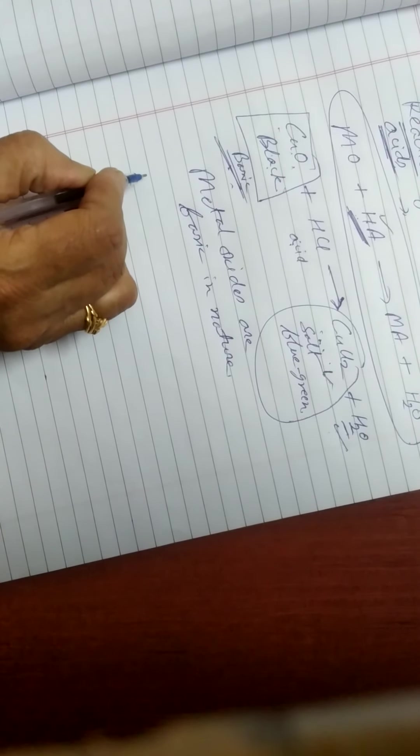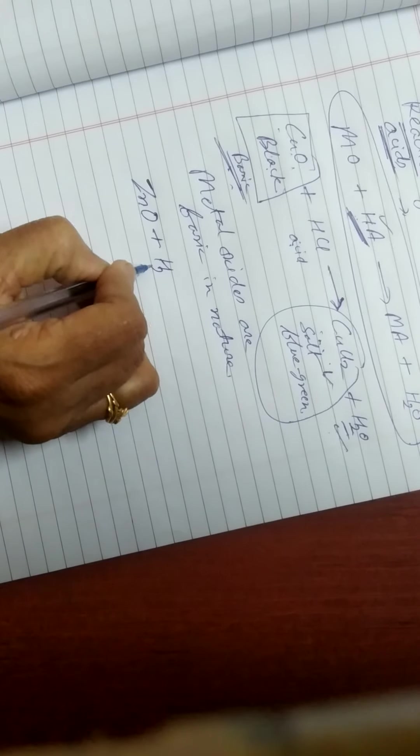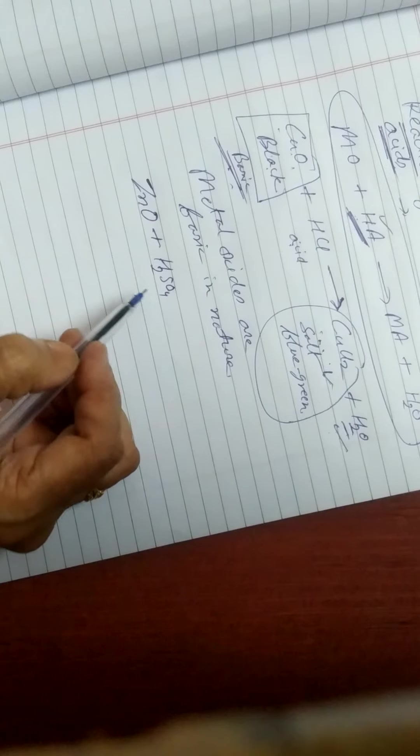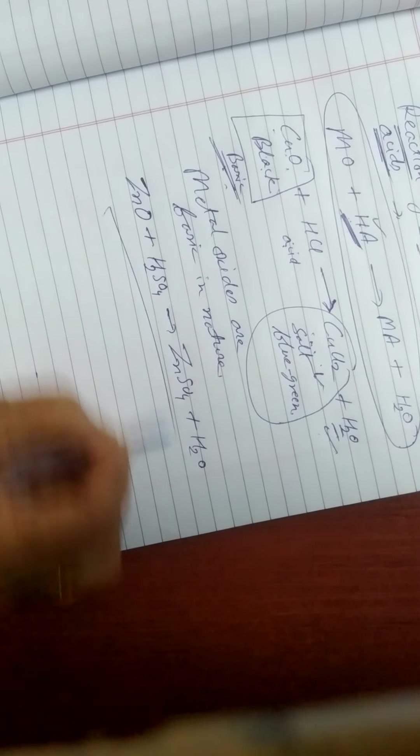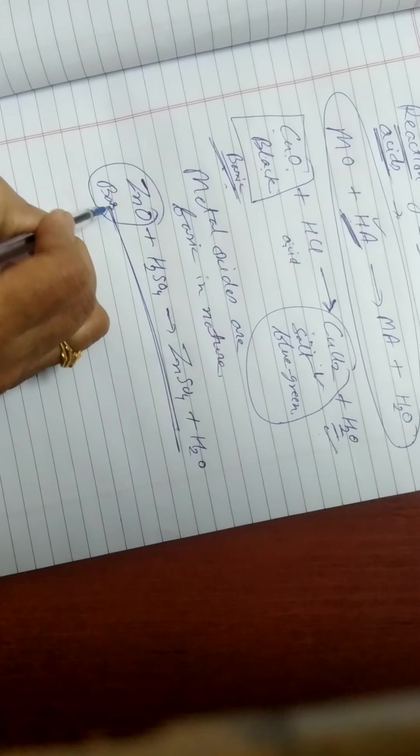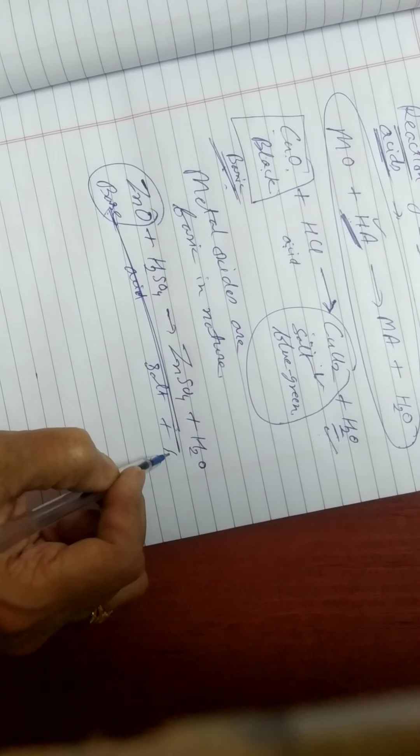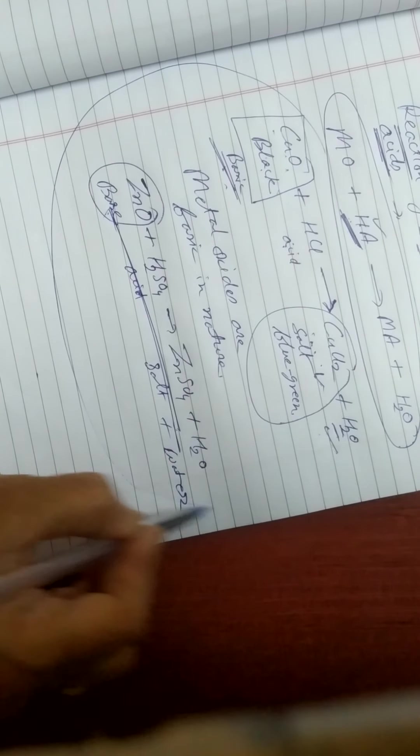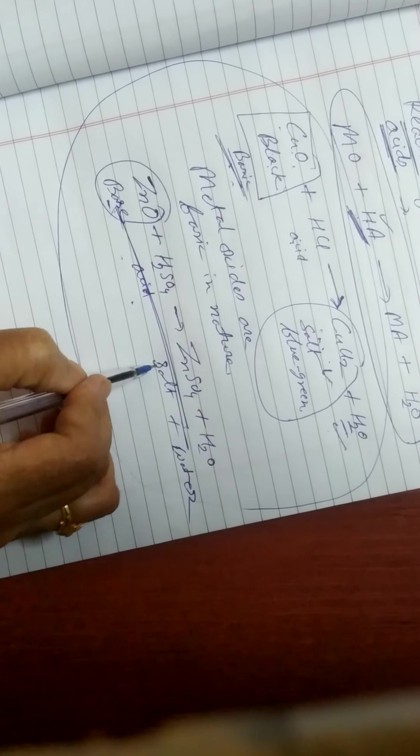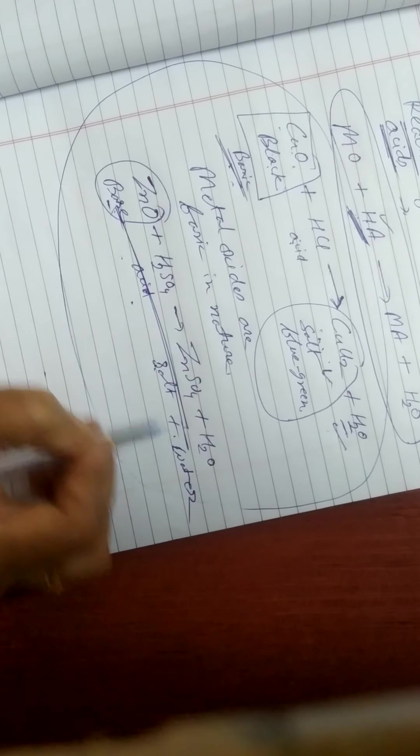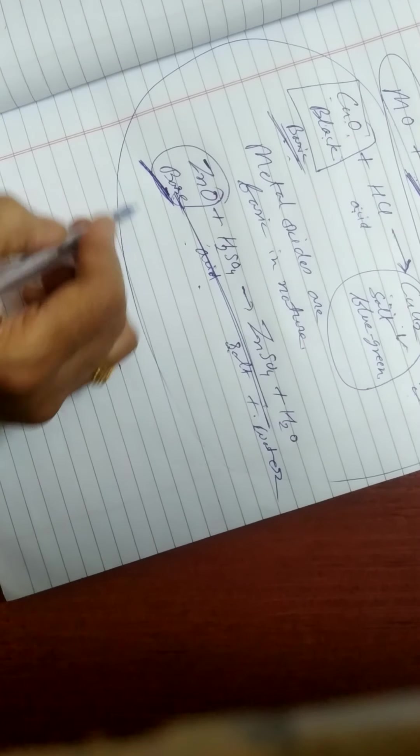Next, if we use some other oxide, suppose ZnO zinc oxide plus H2SO4. You can take any acid - in place of HCl you can take H2SO4. It will produce ZnSO4 plus H2O. This reaction also shows that this is basic in nature and this is acid, so they react to form salt plus water. This reaction is the same as neutralization reaction, where a base and acid combine to form salt plus water. This shows that the reagent we use with the acid is basic in nature.